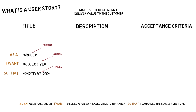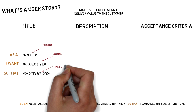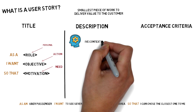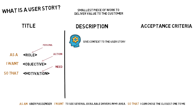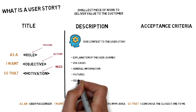We must remember that the title of a user story must map a single functionality of our product or service. The description of a user story helps to give context to that story. It may contain a small explanation of the user journey, some use cases, and in general, any explanation that helps to better understand the title. The description should not be thousands of words, but it should contain any good context that helps clarify what is being expressed, such as pictures or links to the design.